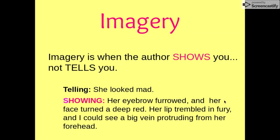Down here, this would be imagery — this would be showing how she looked. Hopefully it creates a mental picture so the reader can almost see it themselves. Her eyebrow furrowed and her face turned a deep red. Her lip trembled in fury, and I could see a big vein protruding from her forehead. That's imagery. Hopefully that developed the sense of sight enough so that you could almost see it and it created a mental picture.